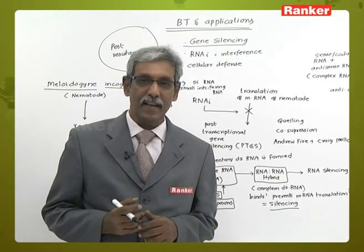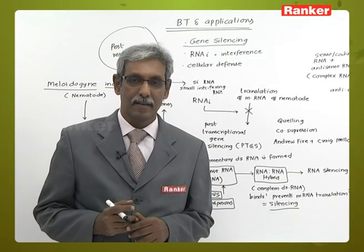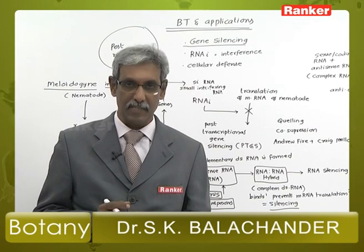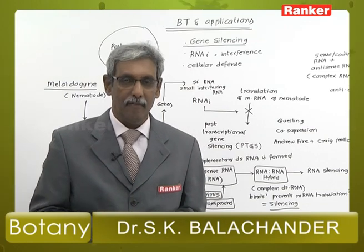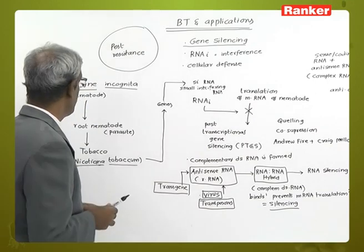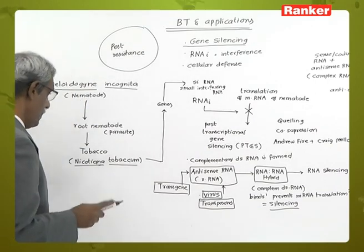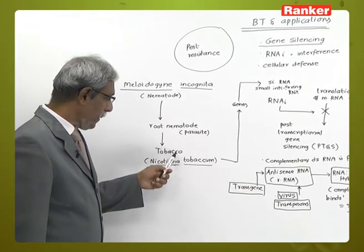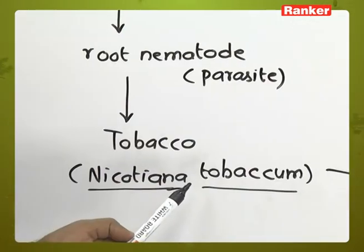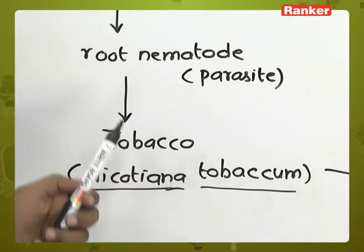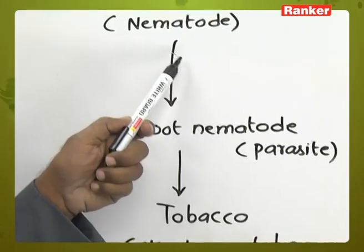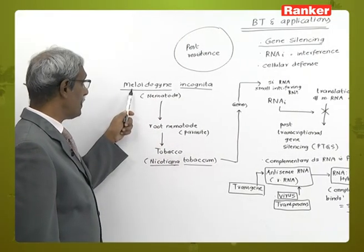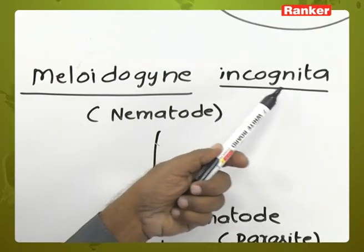After reading about transgenic rice, we are now looking at applications of biotechnology in relation to pest resistance. When you take the crop called tobacco — otherwise termed as Nicotiana tabacum — tobacco is normally affected by a nematode called Meloidogyne incognita.